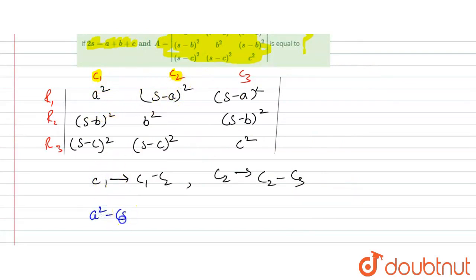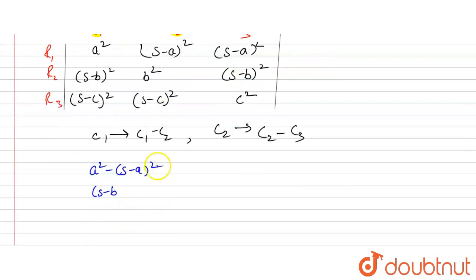And it will be, s minus a squared minus s minus a squared equals zero. Now again, this to this, it will be zero. b squared minus s minus b whole squared.